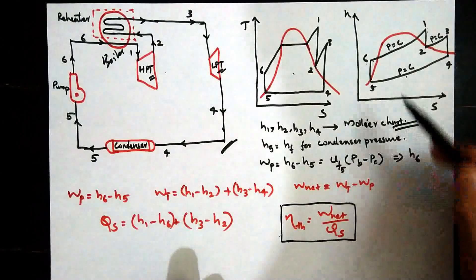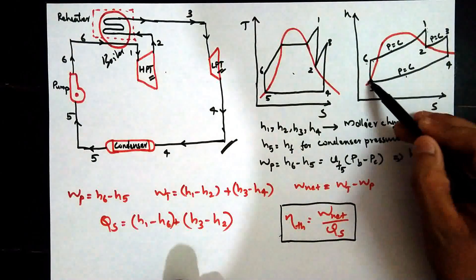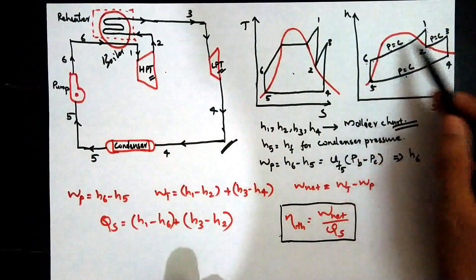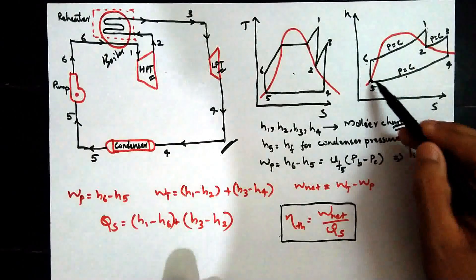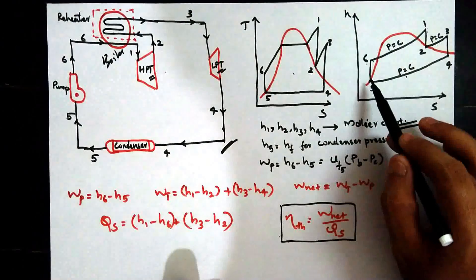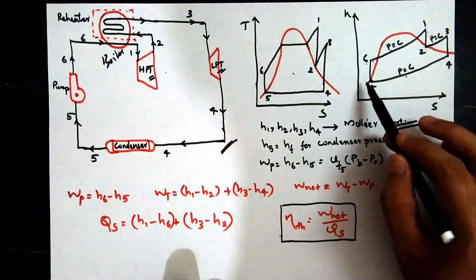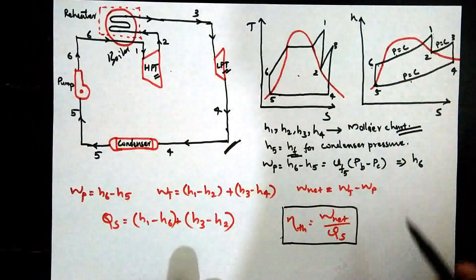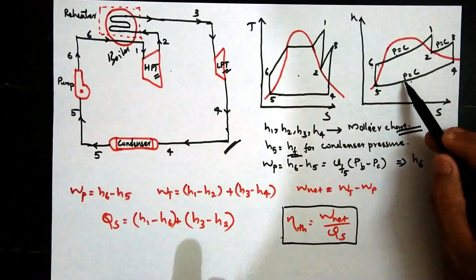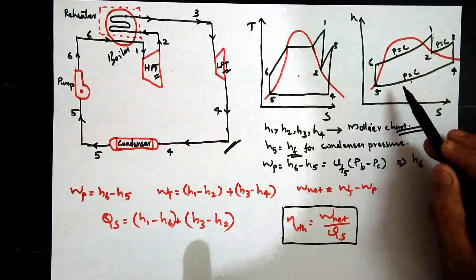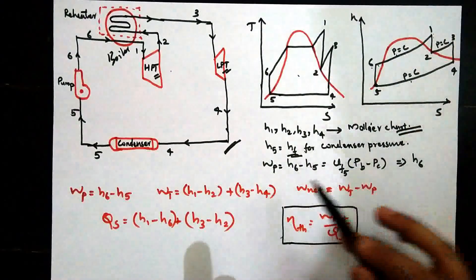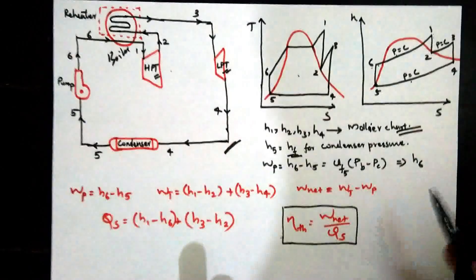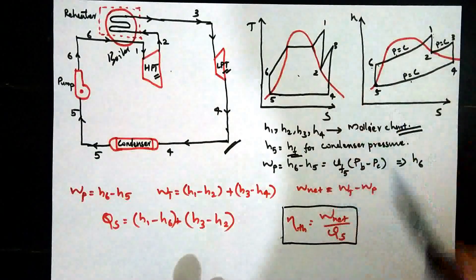Point 5 lies on the saturated liquid line, so H5 equals HF at condenser pressure. We look up the condenser pressure in the steam table to find the HF value, which gives us H5. Similarly, H1, H2, H3, and H4 are read from the H-S diagram at their respective state points.